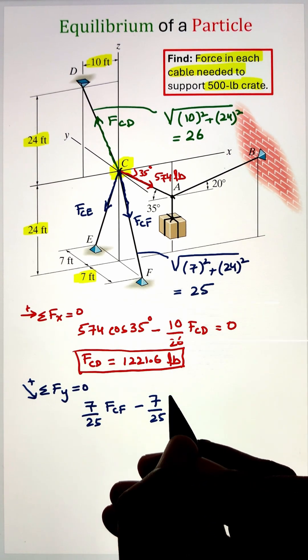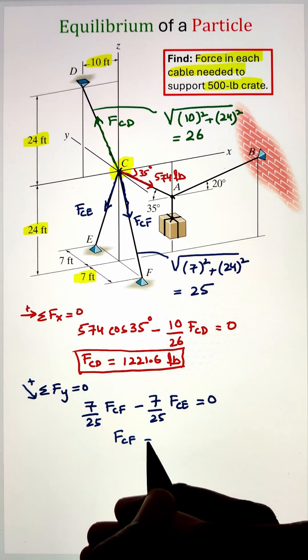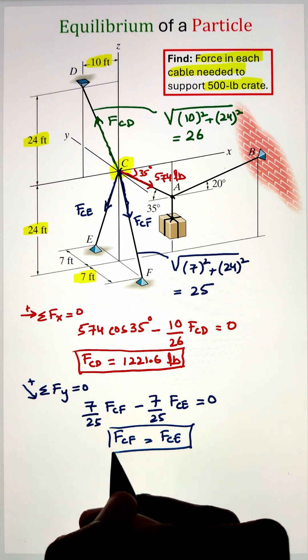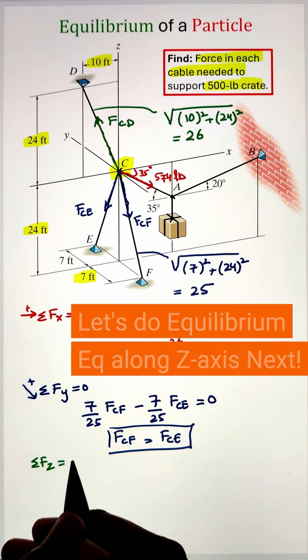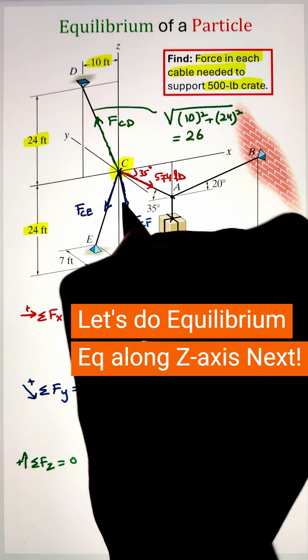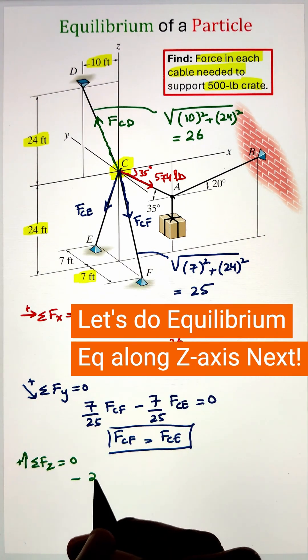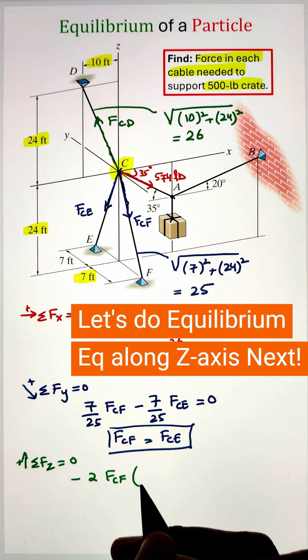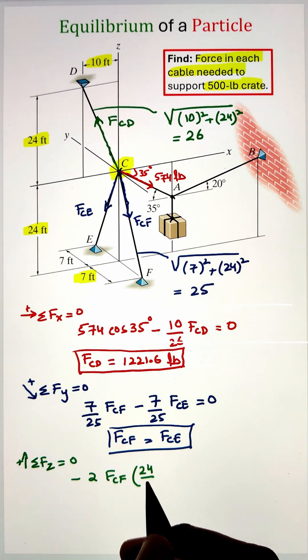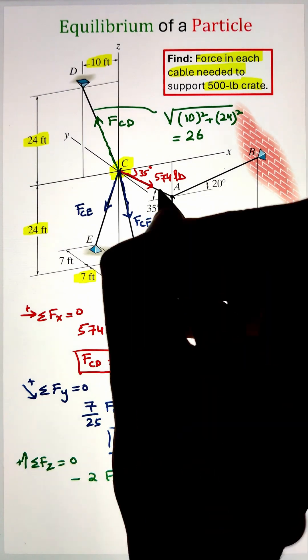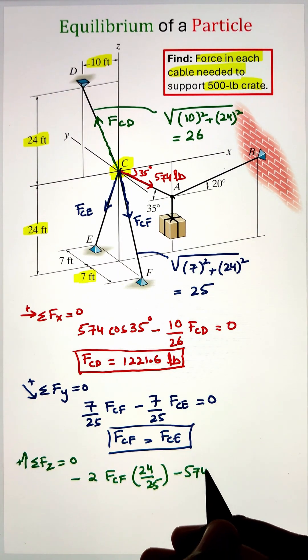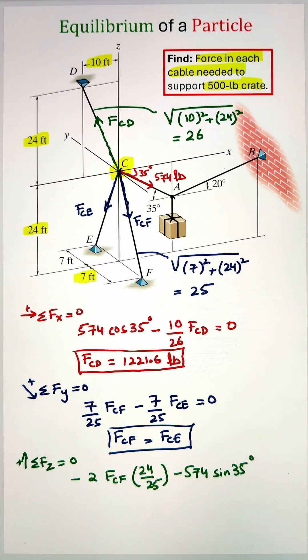Finally, we can apply the summation of forces along the z-axis. The two components of FCE and FCF are going vertically downward by multiplying them with 24 over 25, whereas the 574-pound force, if we take the sine 35 function, is also going in the downward direction. The z-component of FCD will be positive as it is pointed in the upward direction, which can be calculated by multiplying it with 24 over 26.